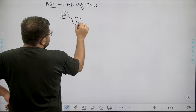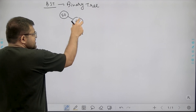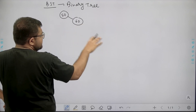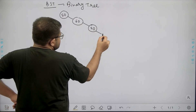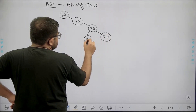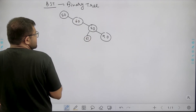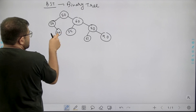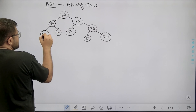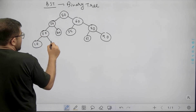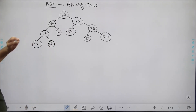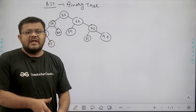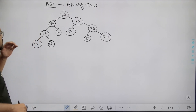For example, let's say the root is 50. On the right side, all nodes have values greater than 50; on the left side, values are less than 50. Let's say we have nodes 60, 70, 90, 65, 55, 30, 40, 20, 10, and 25. For node 60, its left subtree contains values less than 60 but greater than 50, and its right subtree has values greater than 60. This is a valid binary search tree.